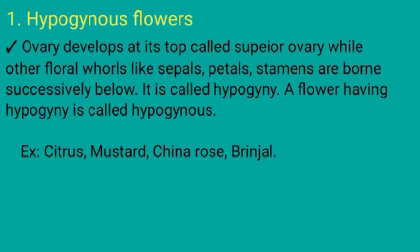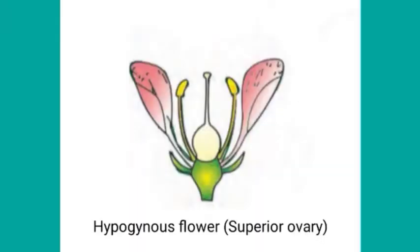Examples of hypogynous flowers: Citrus, Mustard, China Rose, and Brinjal. See in the picture — the ovary is at the top, and the remaining parts like Calyx (sepals), Corolla (petals), and Androecium (stamens) are present below it. Since the ovary is on top, it is called a superior ovary, and these flowers are called hypogynous flowers.